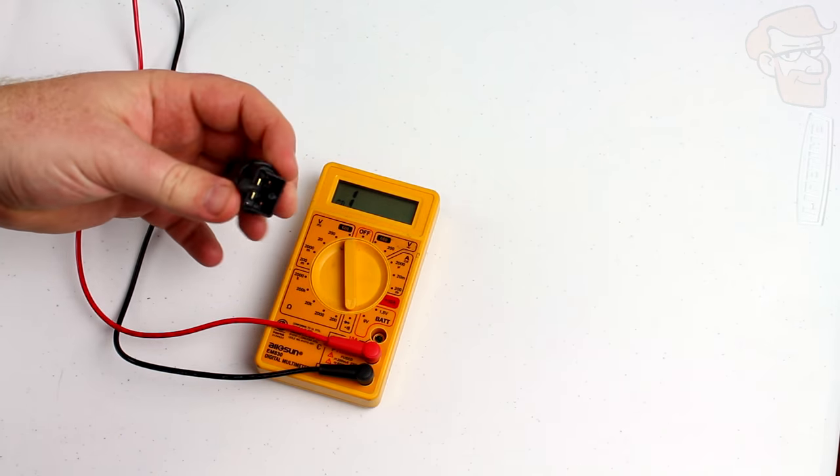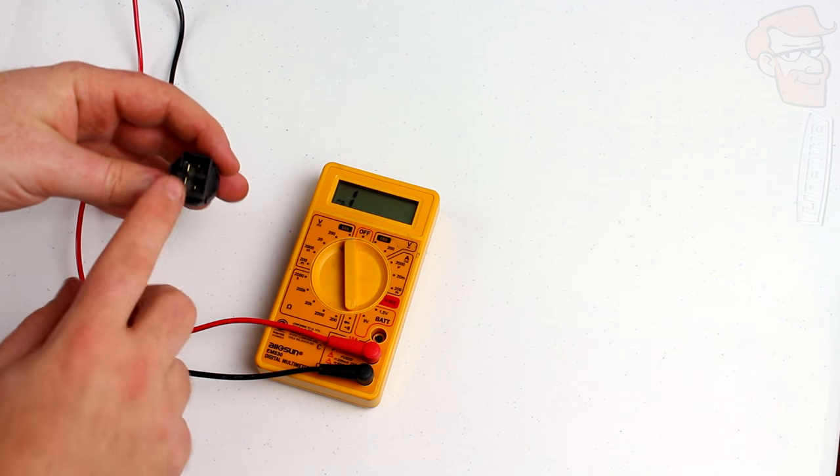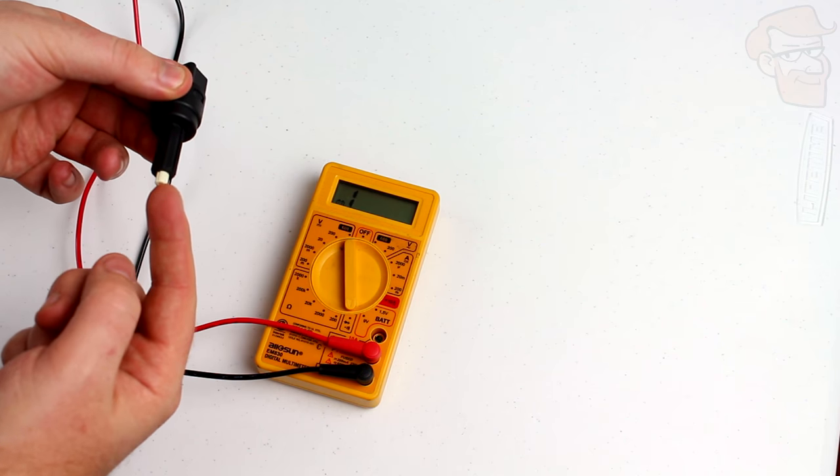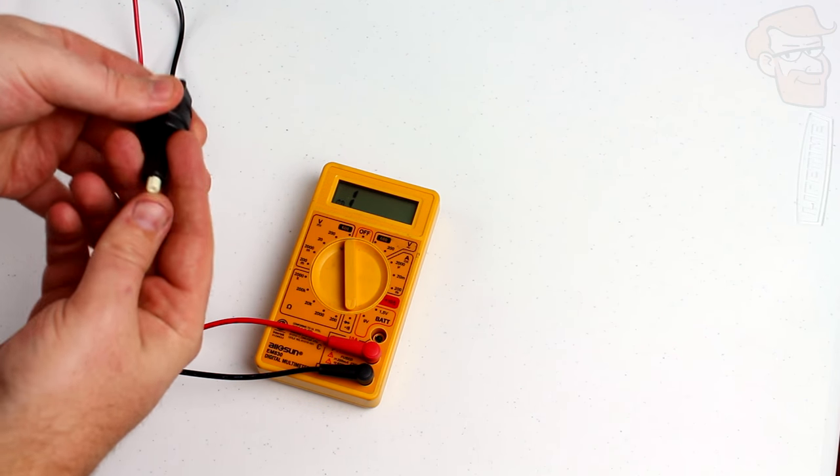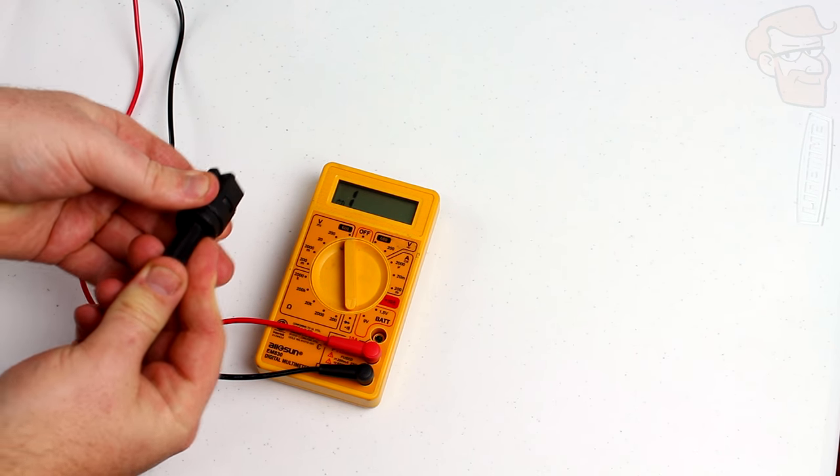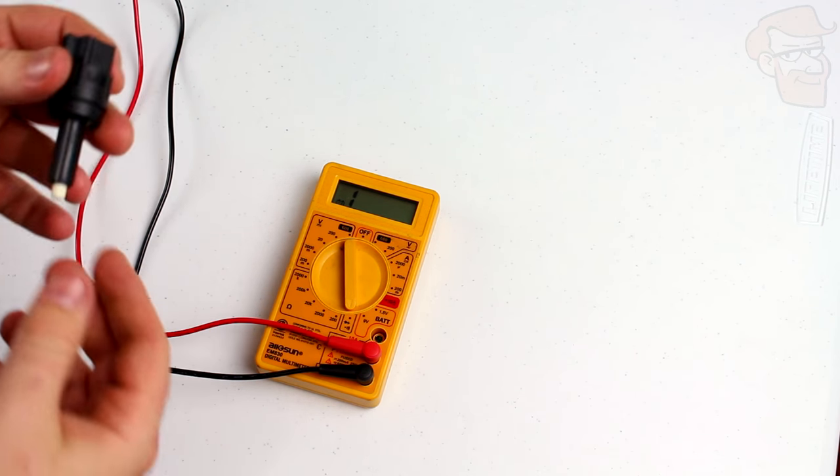Now, if you have a four pin brake light switch like this and you test these and you get that same result, one of them by default is powered and then you press it and it's off, and the other one by default is off and you press it and it's powered. You know you have a working brake light switch.